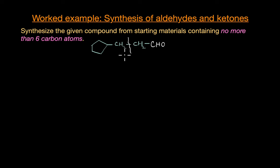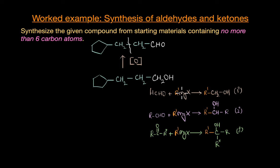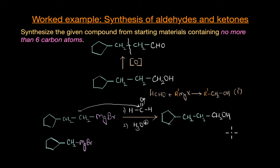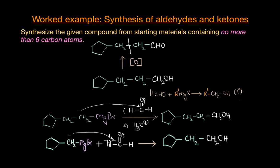Taking inspiration from the previous example, if we try to arrive at this aldehyde via oxidation of a primary alcohol, we need to react a Grignard reagent with formaldehyde. But if we use a six-carbon Grignard reagent with formaldehyde, the resulting primary alcohol has one CH₂ group fewer than the desired alcohol. So reacting a Grignard reagent with formaldehyde alone cannot give us the alcohol we want.